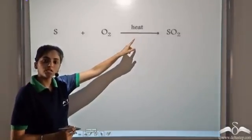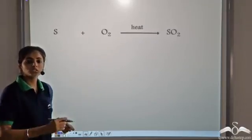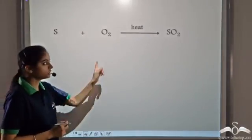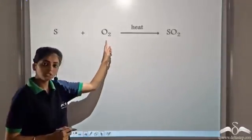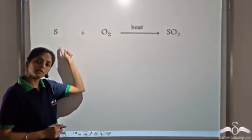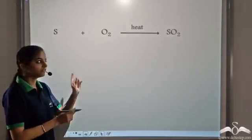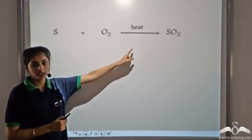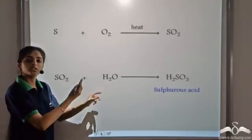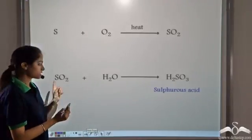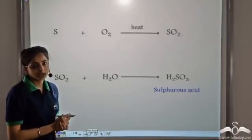When burning sulphur is introduced into a jar containing oxygen, it forms sulphur dioxide. Since oxygen is being added to the non-metal, this is known as oxidation of the non-metal. Whenever a non-metallic oxide is made to react with water, it forms the corresponding acid. So sulphur dioxide, when it reacts with water, forms sulphurous acid.